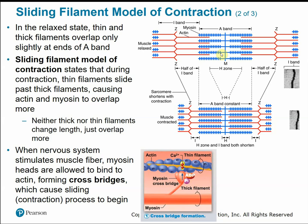During contraction, there is an increase in the degree of overlap between the two filaments. Neither the thick nor the thin filaments actually change in length — they just overlap more. The sarcomere as a unit will shorten, but the myofilaments themselves do not.